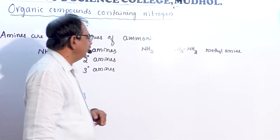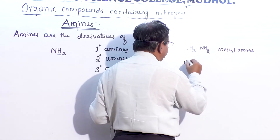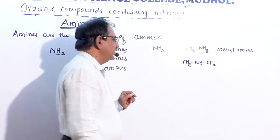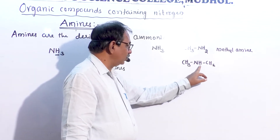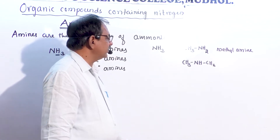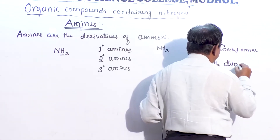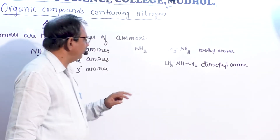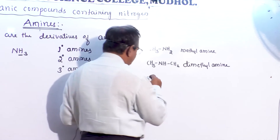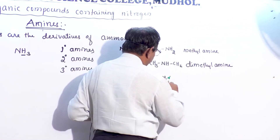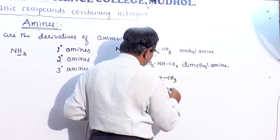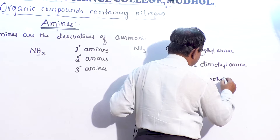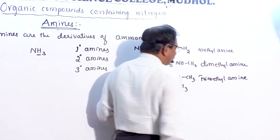If two hydrogen atoms of ammonia are replaced by two methyl groups, the compound is called dimethylamine. If all three hydrogen atoms are replaced by three methyl groups, then this is called trimethylamine.